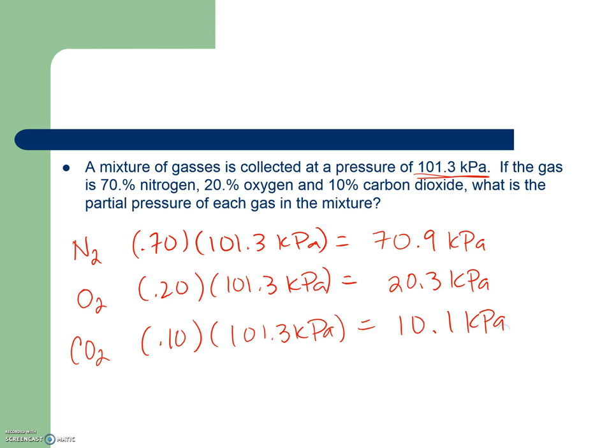And so each of these, if I add these together, just to check my work, should equal 101.3. So if I add these three together, they're going to be slightly different due to rounding, but it should be pretty close. And I get, I actually get the exact 101.3 kPa. So I know how much each is contributing.